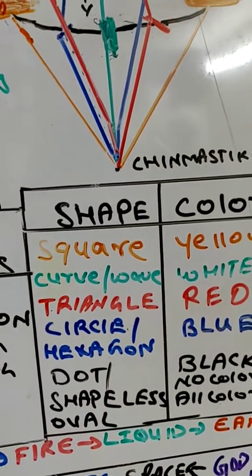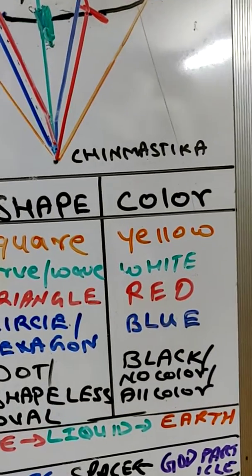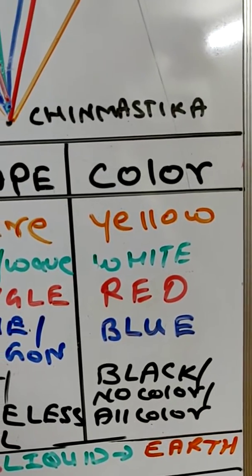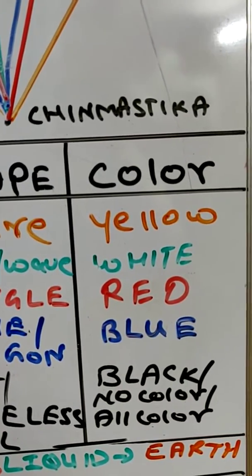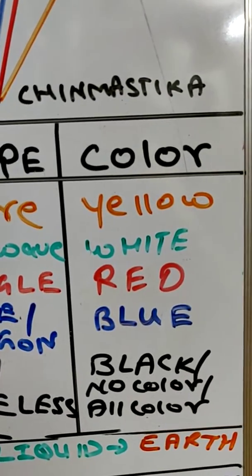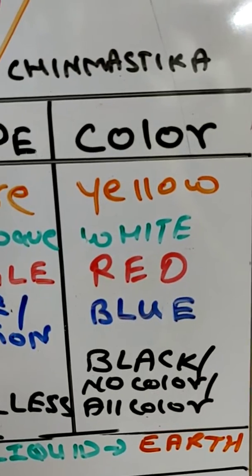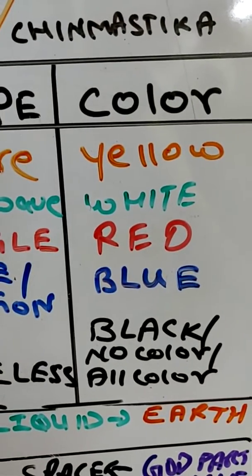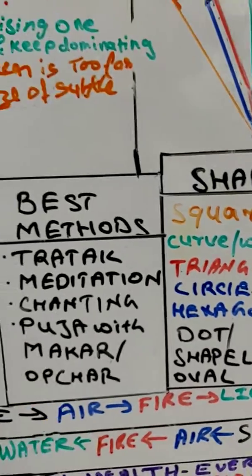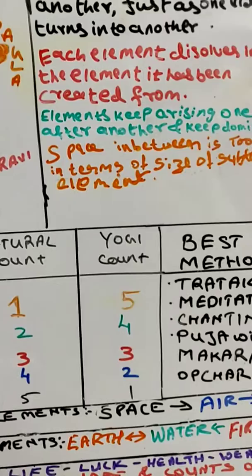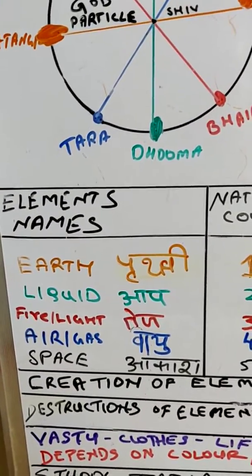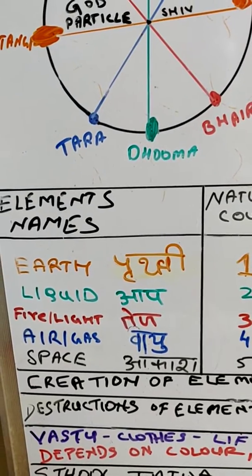The color of Prithvi Tattva is yellow. The color of water element is white. The color of fire element is red. The color of air element is blue. And the color of space element is black — no color, or all colors together. To digest this wisdom, you have to meditate, do your mantras, do Hansa Kriya, and also report on the group. We will see you in the next video. Hari Om Tattva Sat.